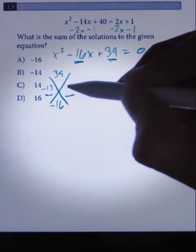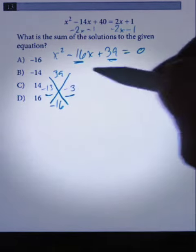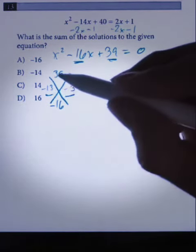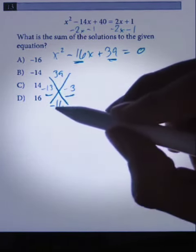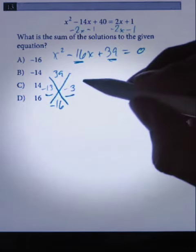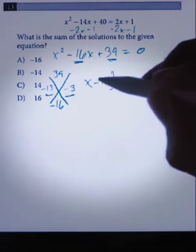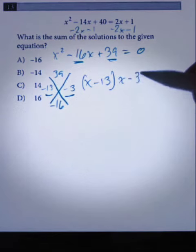And the ones that come to mind are minus 13 and minus 3. If we multiply these two together we'll get 39, and if we add them up we get negative 16, so these work. So that means our factors are now x minus 13 and x minus 3